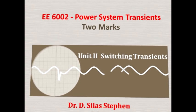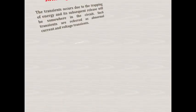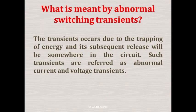What is meant by abnormal switching transients? The transients that occur due to the trapping of energy and its subsequent release somewhere in the circuit are referred to as abnormal current and voltage transients.